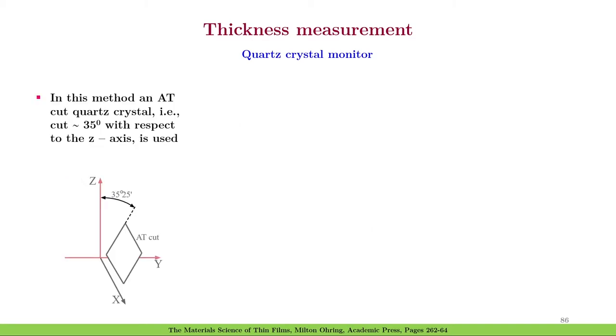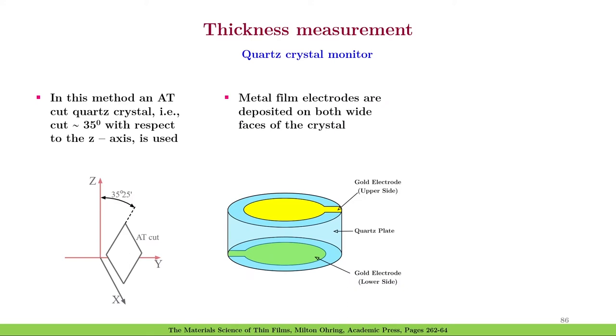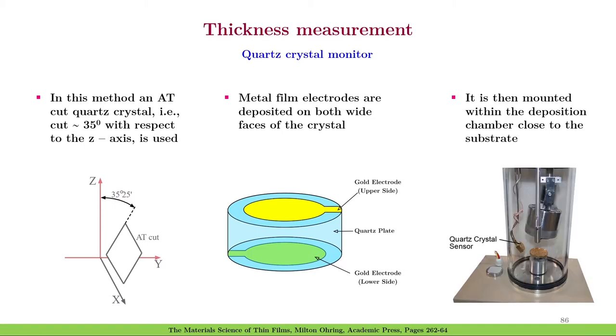In the quartz crystal monitor, we will use an AT-cut quartz crystal that is a crystal that is cut approximately 35 degrees with respect to the z-axis. On both sides of the quartz crystal, metal film electrodes are deposited. It is then mounted within the deposition chamber close to the substrate.